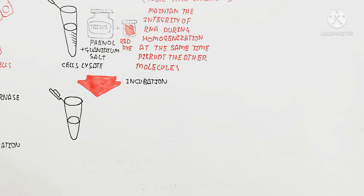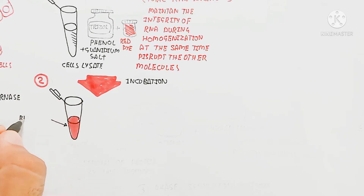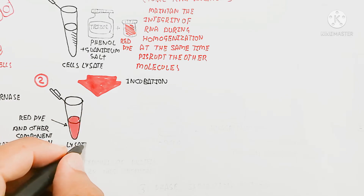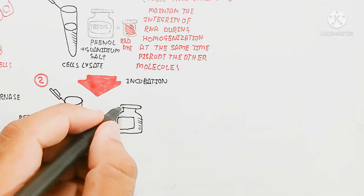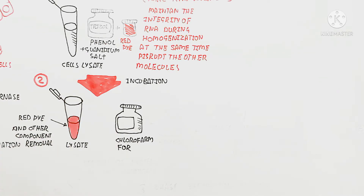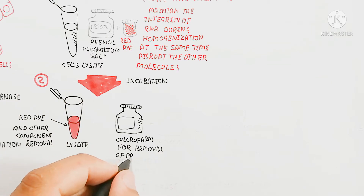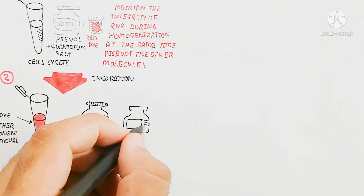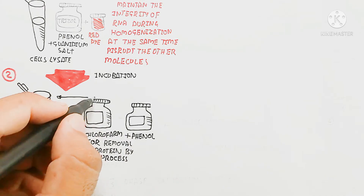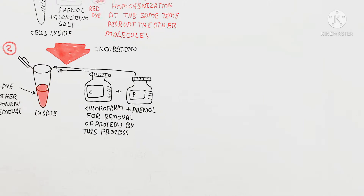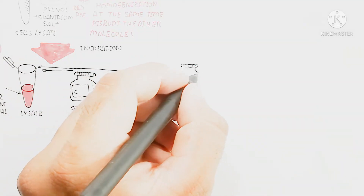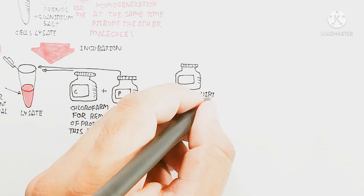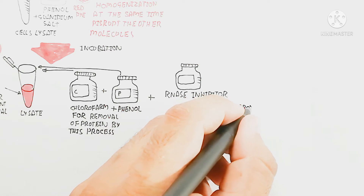The red dye colors the organic phase, which is visible after centrifugation. After incubation, the red dye and other components are separated. Chloroform and phenol are added for removal of protein. Centrifugation uses centrifugal force — rotation — to separate molecules: heavier molecules settle down and lighter molecules rise.